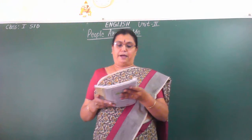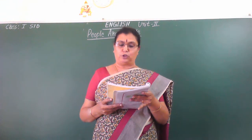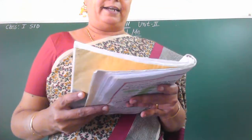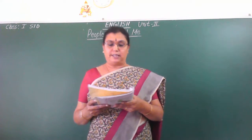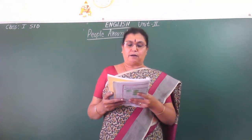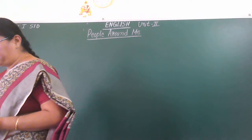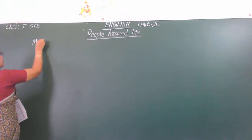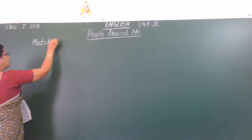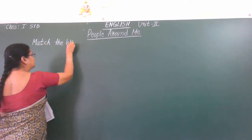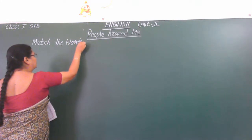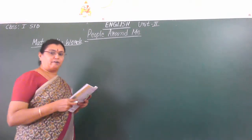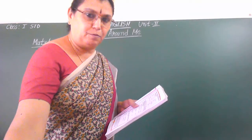Next, part four: different words are used to describe different kinds of people. Match the words to the description. The first description is: someone who is not afraid. Match the words — take your pencil and look at the options.